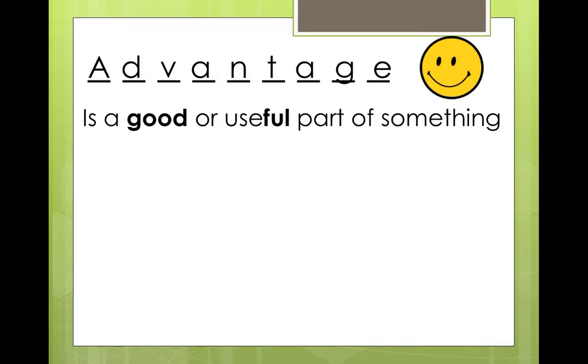For example, when we have something good, we call that an advantage. Please repeat after me. Advantage. The question is, how do you spell advantage? Advantage. You can guess. A-D-V-A-N-T-A-G-E. An advantage is a good or useful part of something. Good or useful.